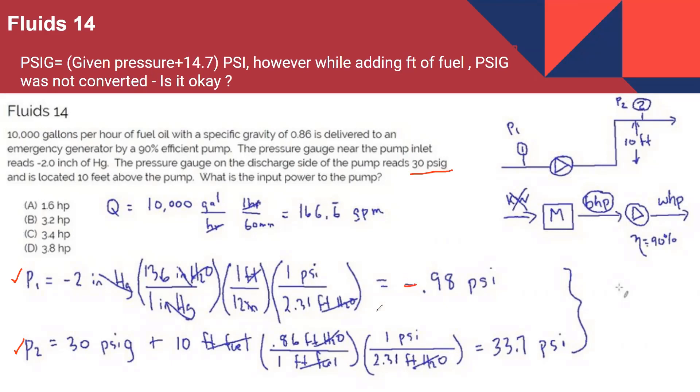And P2, this PSIG, right? So we didn't add 14.7. That's my question. So you're saying P2 is PSIG. I'm with you there. Is P1 PSIG?